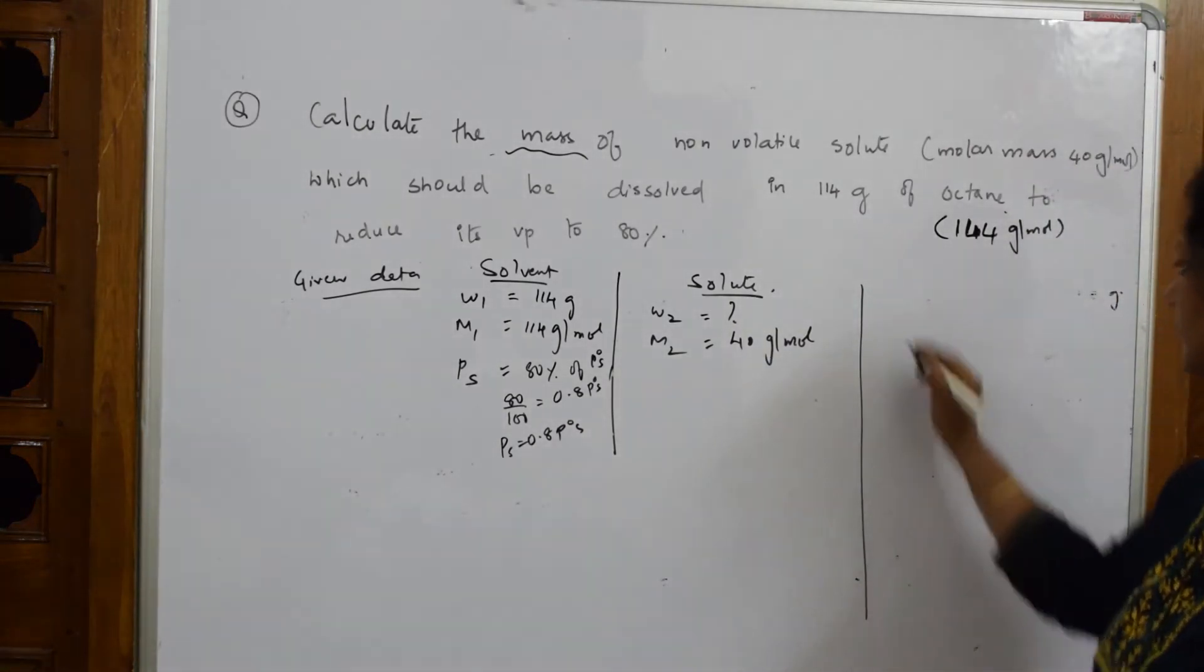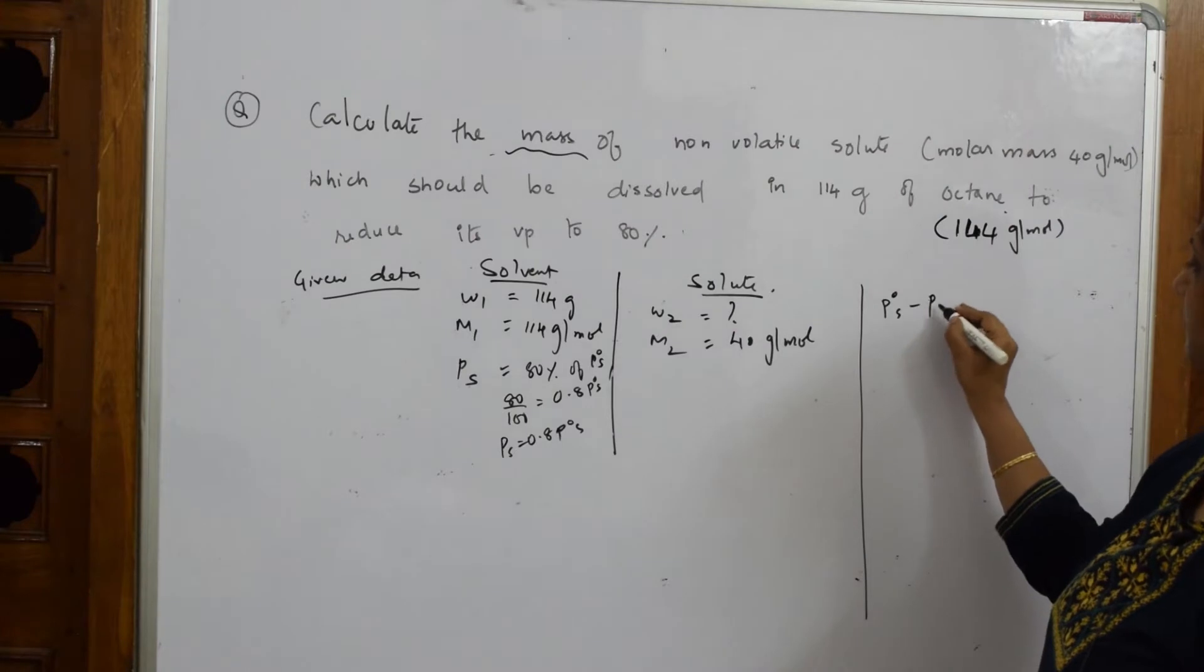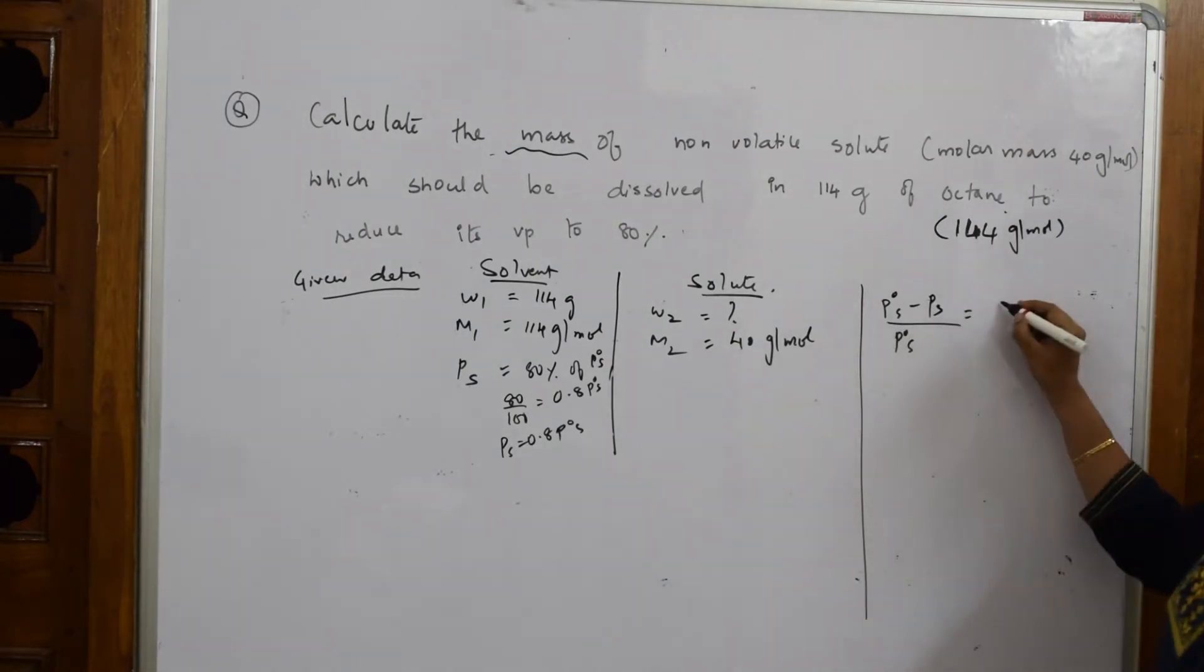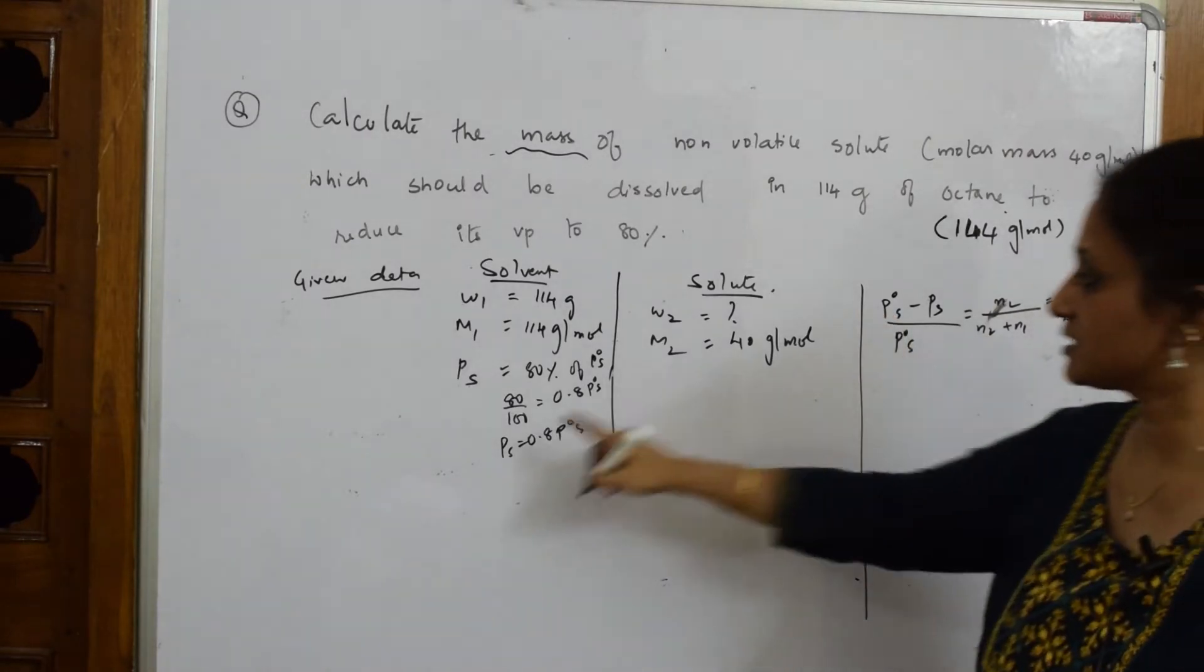The equation is (p0s - ps)/p0s = n2/(n2 + n1), which equals (w2/m2)/(w2/m2 + w1/m1).